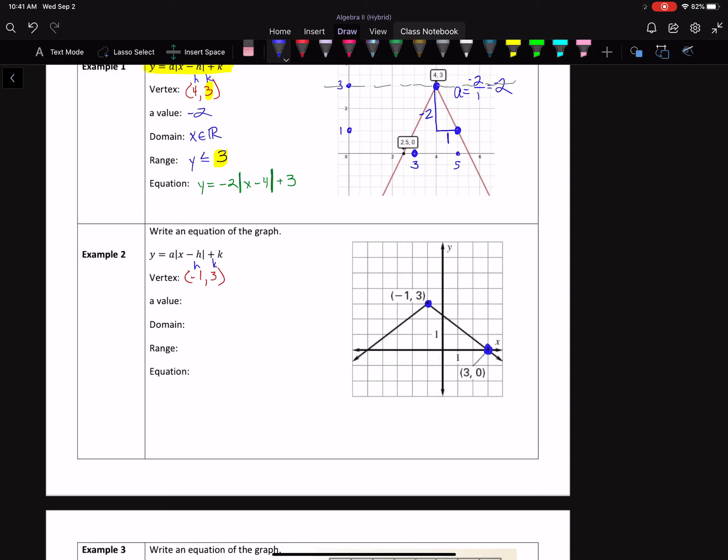Okay, so now we're going to count rise over run, so we're going down 1, 2, 3. So we went down 3 to the right, 1, 2, 3, 4. So my A value is going to be negative 3 over 4, rise over run.